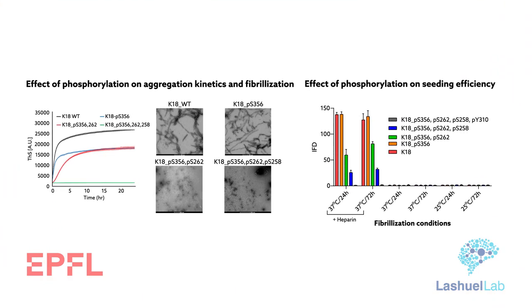Findings also showed that incubation of hyperphosphorylated variants of K18 did not enhance aggregation or produce the seeding activity typically associated with tau fibrilization in cells. Rather, it was suppressed. In fact, this activity was increasingly dulled with an uptick in the number of phosphorylated sites.